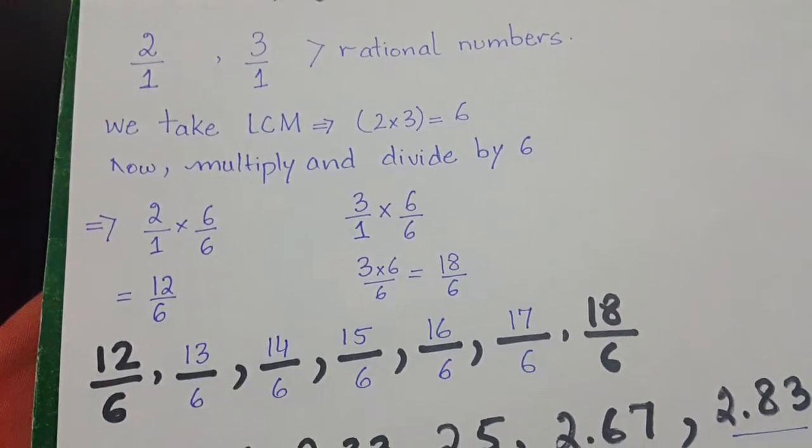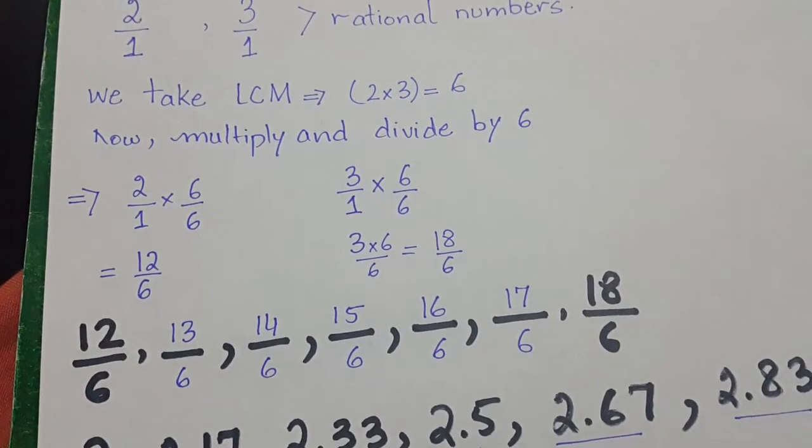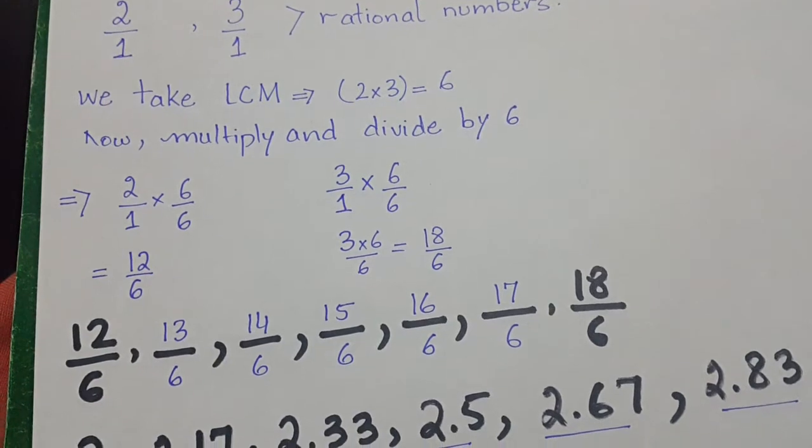The five rational numbers are: 13/6, 14/6, 15/6, 16/6, and 17/6.